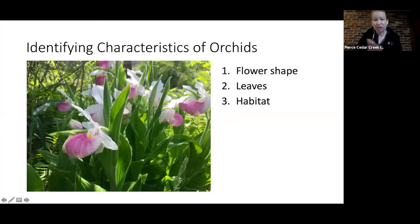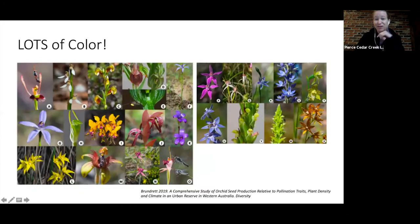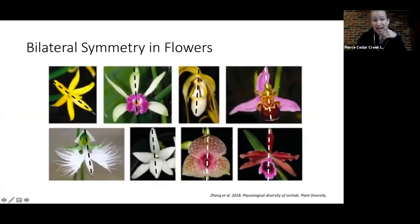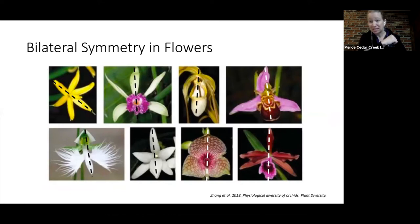When identifying orchids, you're looking at three main things: flower shape, leaves, and the habitat in which they're growing. Orchids can come in many different colors — green, yellow, white, purple, pink, blue. One key characteristic is bilateral symmetry: if you draw a line down the middle, the left and right sides should look pretty similar.